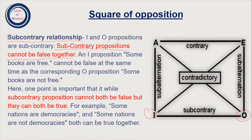An I proposition 'Some books are free' cannot be false at the same time as the corresponding O proposition 'Some books are not free.' We cannot use both propositions as false at the same time, because one says 'Some books are free' and the other says 'Some books are not free' — one is contradicting the other, so both cannot be false together. To put it simply, if two guards at a library say 'Some books are free' and 'Some books are not free,' both cannot be giving wrong information — both cannot be false.